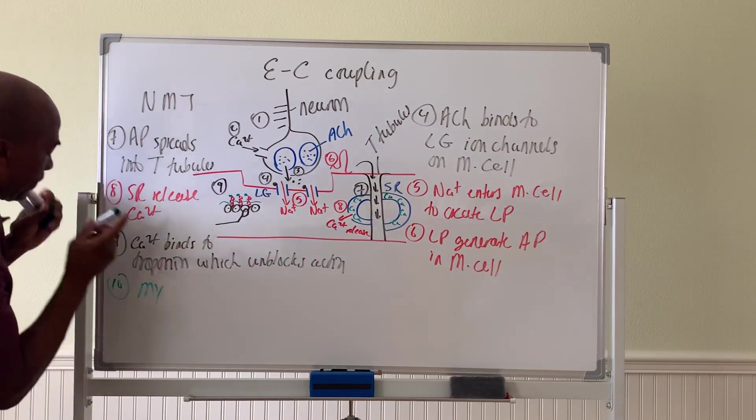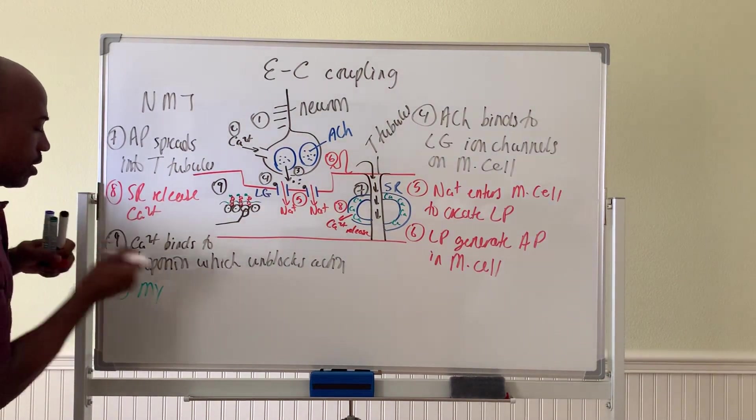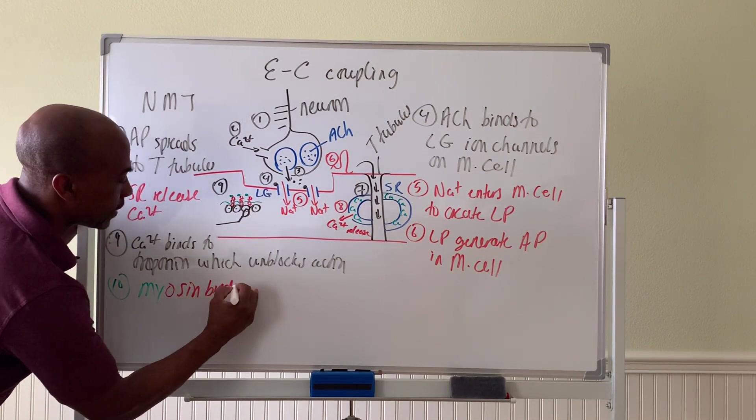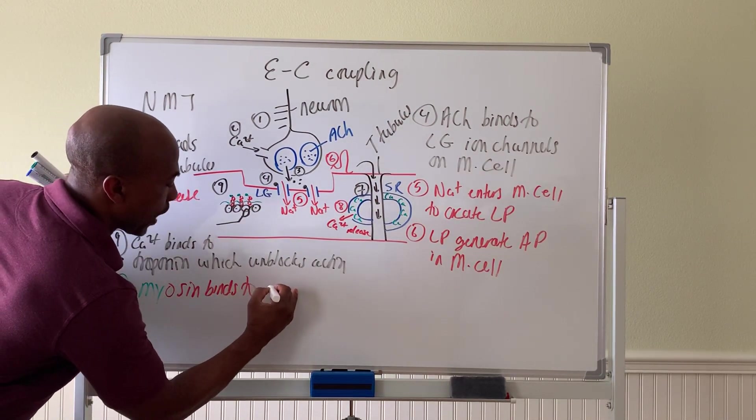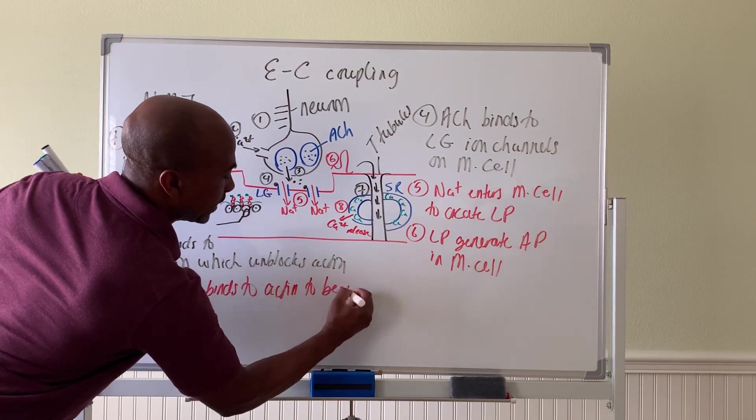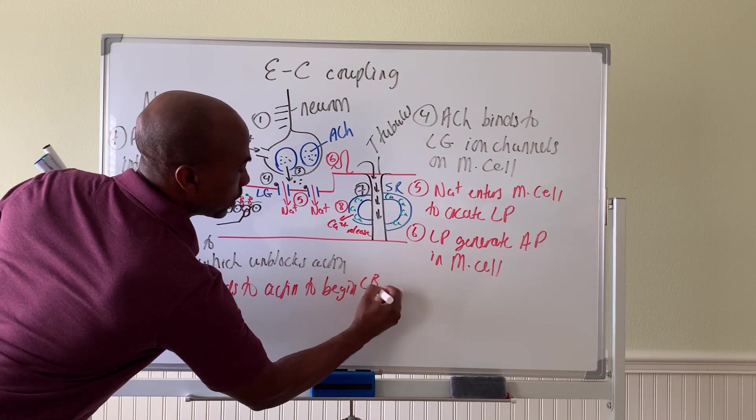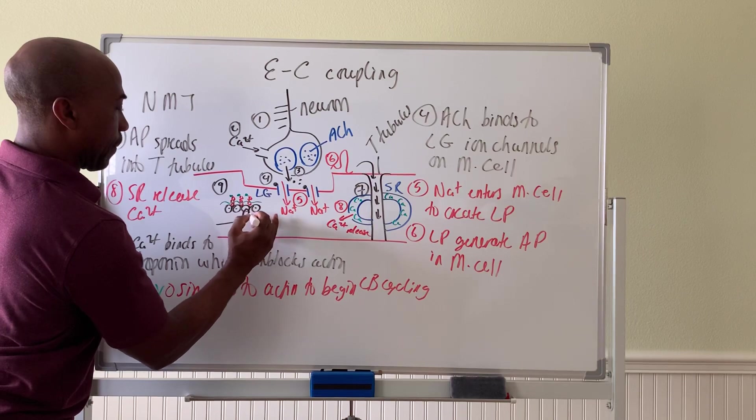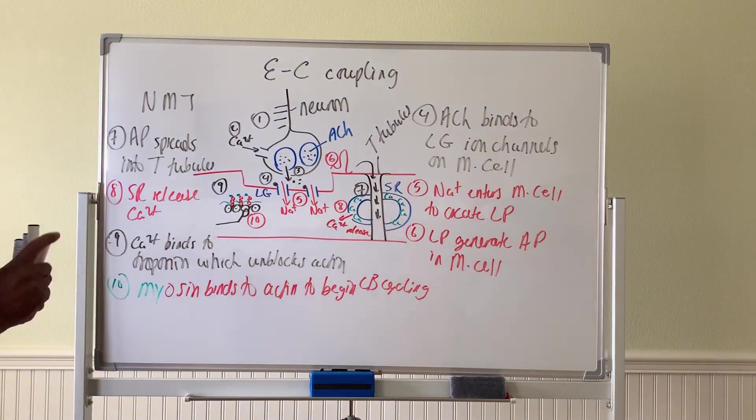Which unblocks actin. And then step ten, myosin binds to actin to begin your crossbridge cycling. So that's step ten.